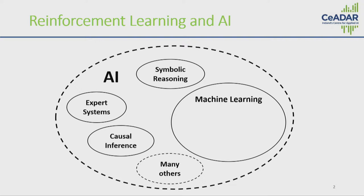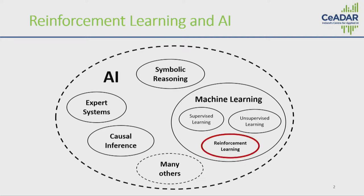Within machine learning itself we have supervised learning, which is a lot of the machine learning we'd hear about, where we have labeled training examples. We also have unsupervised learning, things like clustering, where the data is really driving the learning and the outputs. And then finally this paradigm called reinforcement learning, which is a newer area — research has been going on for quite a number of years but it's not widely deployed in real-world scenarios yet, though that is very much changing.